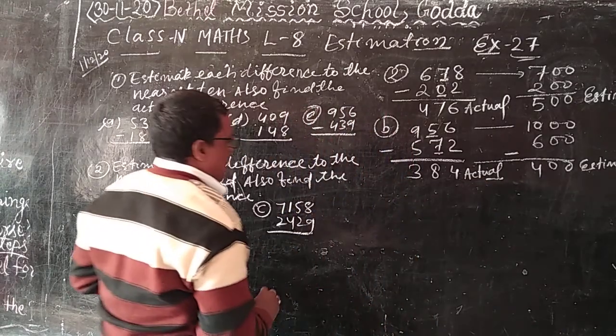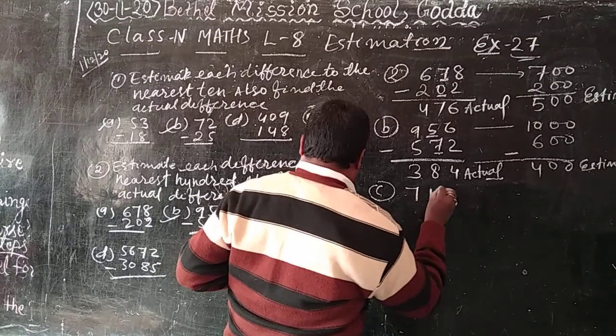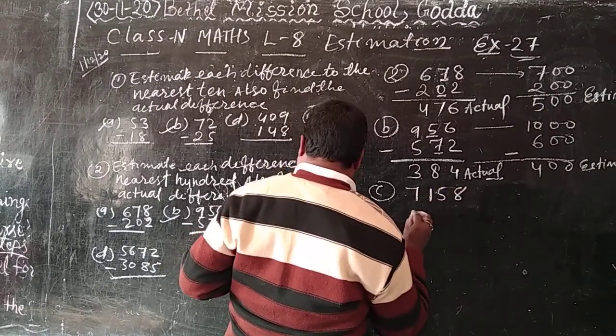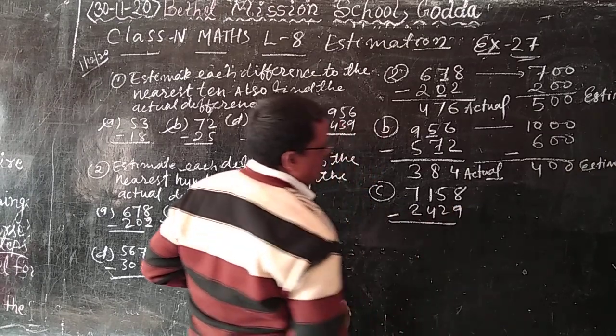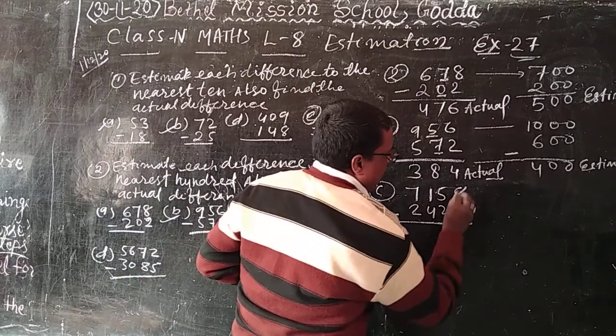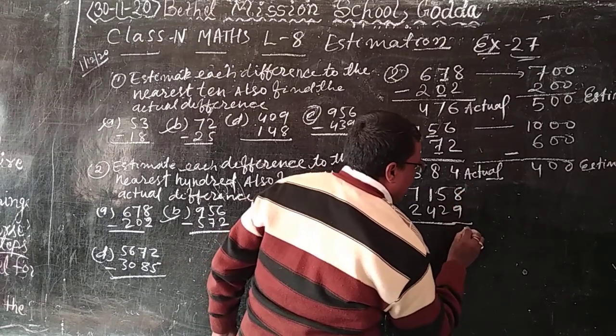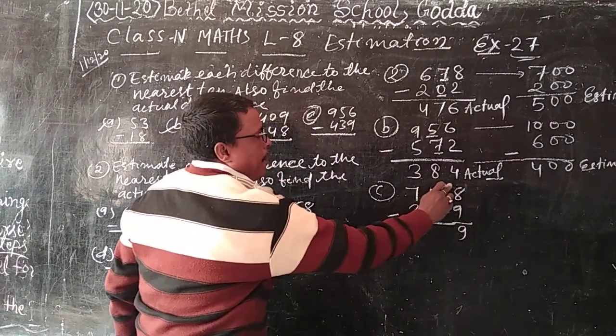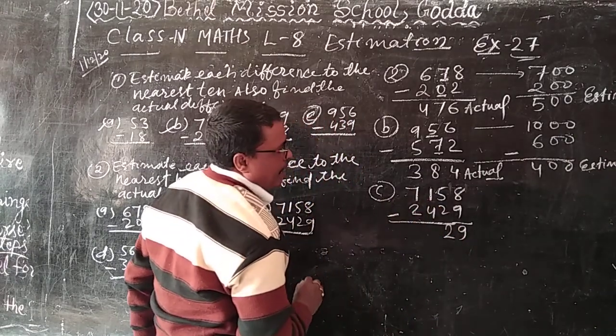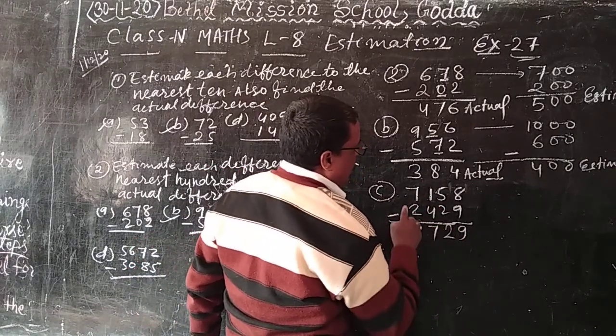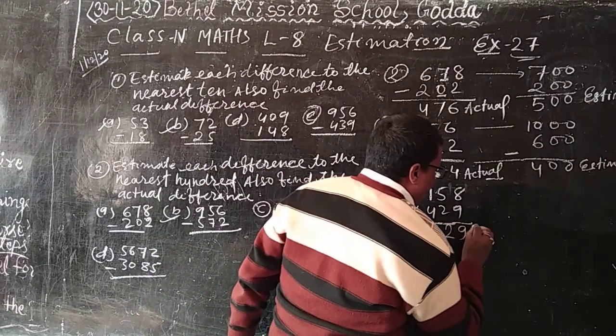C number, 7458 minus 2429. 18 minus 9, how much? 9. 4 minus 2, 2. 11 minus 4, 7. 6 minus 2, 4. This is actual, 5029.